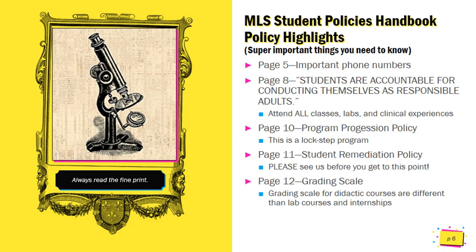We'll start on page 5 with important phone numbers. Here you will find a list of phone numbers for everyone in the Department of Lab Sciences, as well as important CHP phone numbers such as the Financial Aid Office, the Registrar's Office, the Dean's Office, Campus Police, etc. I can promise that you will need at least one of these phone numbers at some point during the program, so just make a note that you can find those phone numbers there.